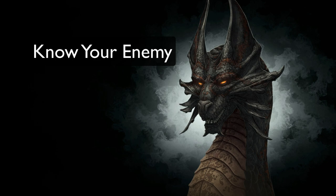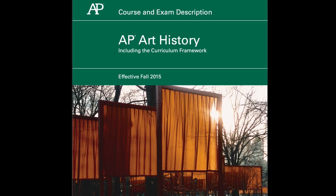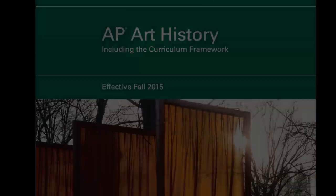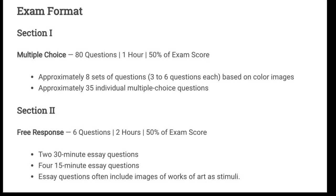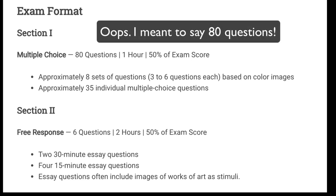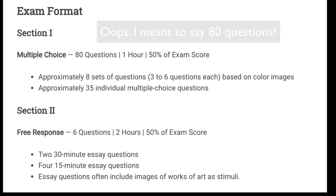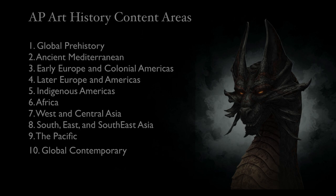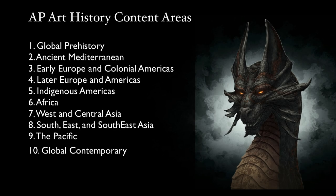The test isn't really your enemy, but you need to know exactly what to expect. The AP Art History exam is three hours long. It has two sections. The first consists of multiple-choice questions and you will have one hour to complete this section. The second section is made up of six free response questions — four 15-minute short responses and two 30-minute long responses. There are ten content areas tested on the exam from three big ideas, which roughly correspond to the galleries in your coursework over the past year.